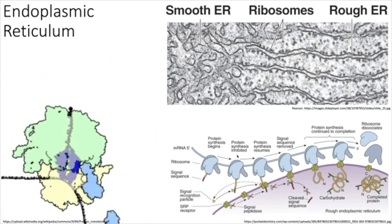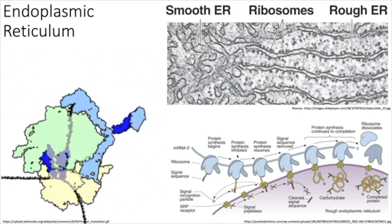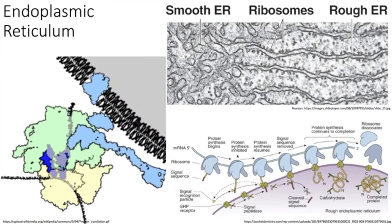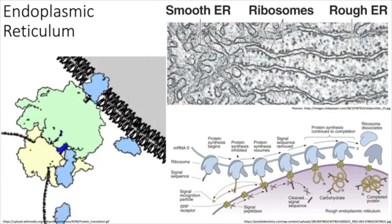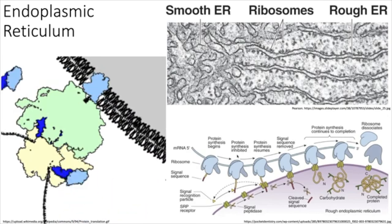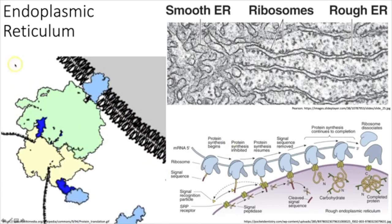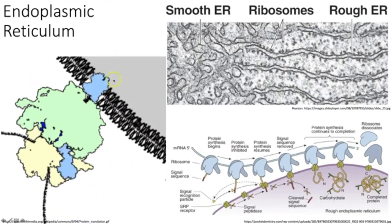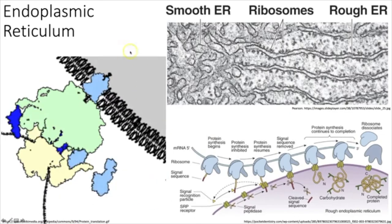Peroxisomes are similar to lysosomes and act as an assistant to the mitochondria in many ways. Their job is to handle reactive oxygen species and break down fats. Glycolysis occurs in the cytoplasm where we break down sugar; the mitochondria finish that job using the citric acid cycle. But peroxisomes can take pieces of fat, break them down, and send the products into the mitochondria — hence, they're really fatty acid breakdown machines.